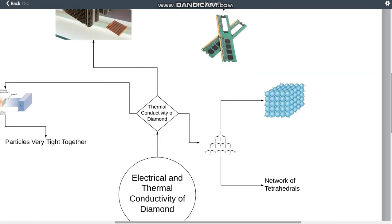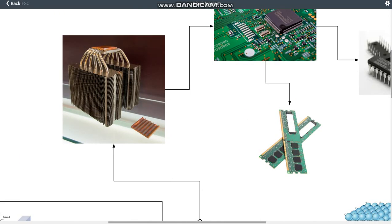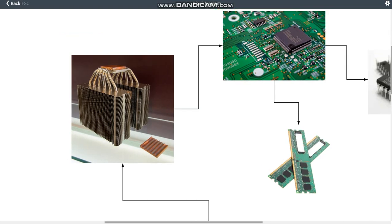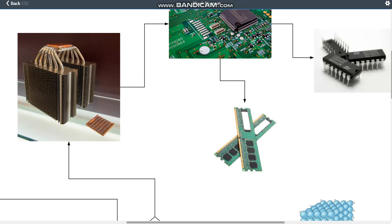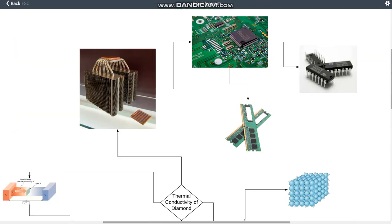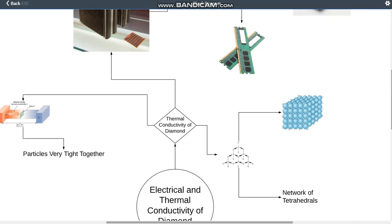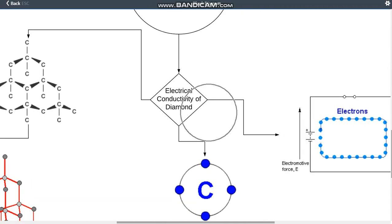This property makes diamonds a great heat sink, which is a device used in electronics to essentially draw the heat away from important components of computers and microchips so it doesn't overheat. So now about the electrical conductivity of a diamond.